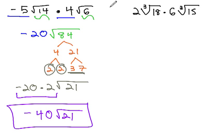Let's try another example where we multiply radicals together by multiplying what's outside and inside together, and then simplifying the radical. Here we have 2 times the cube root of 18, times 6 times the cube root of 15.